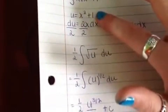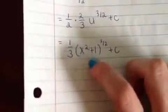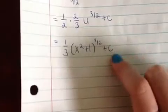Since the 2's cancel, it would be 1 third u. But now we can bring in our u. Which, up here, we stated that u was x squared plus 1. So, x squared plus 1 to the 3 halves, like up here, plus c.